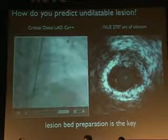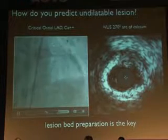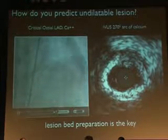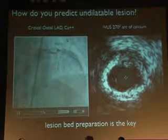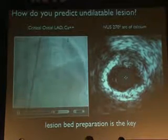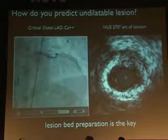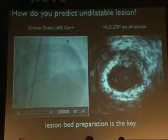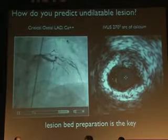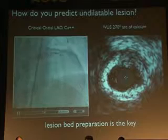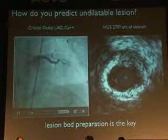Lesion bed preparation is key. Even after rotational atherectomy, in my practice I make sure I go one-to-one balloon dilatation. Instead of going straight to high-pressure dilatation in these thin-strut stents, I dilate the de novo lesion up to 18-20 atmospheres, making sure the balloon is fully expanded in that artery before thinking about getting a stent in.